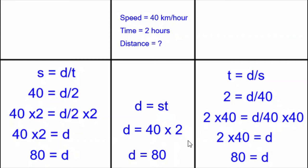Today's Daily Dose of Math is about the distance, speed, and time formula. Here we have a problem up at the top. The speed is 40 kilometers per hour. The time is two hours. What is the distance?